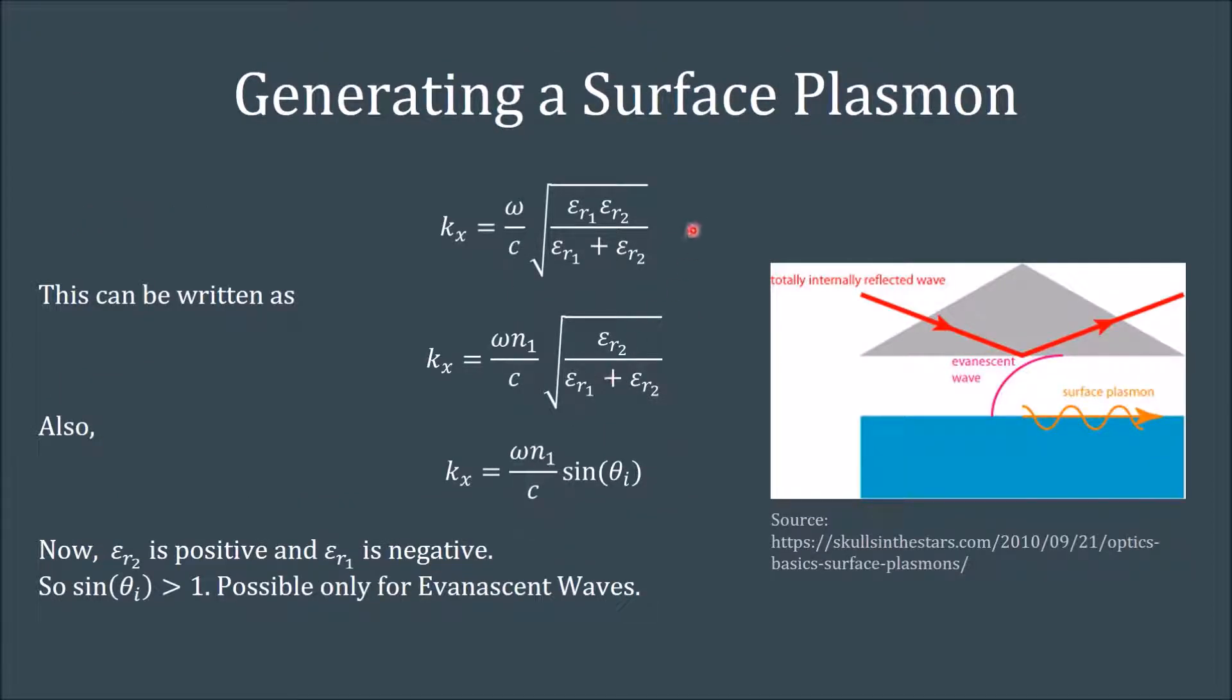Now let us discuss the generation of a surface plasmon. From the earlier slides, we got this relation which is the dispersion relation for a surface plasmon. If we write root over εr1 as the refractive index of the first material, we get this expression. Also by simple geometry, kx can be written as ω n1 by c sin θi where ω n1 by c is the magnitude of the total propagation vector. From these two expressions, we see an anomaly. The expression root over εr2 upon εr1 plus εr2 will always be greater than 1, but in the second expression we have sin θi which is ideally always smaller than 1. So for generation of a surface plasmon on an interface, we need the angle of incidence for which sin θi becomes greater than 1. From our earlier studies, we know that this is only possible for evanescent waves. So for generating a surface plasmon, evanescent waves are necessary.